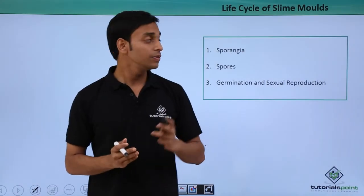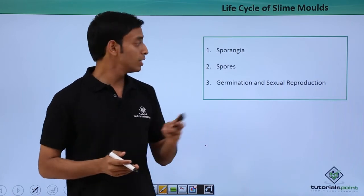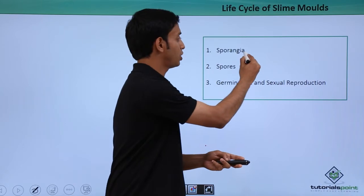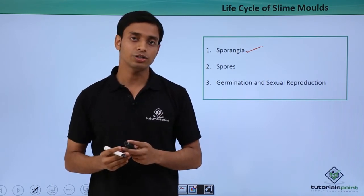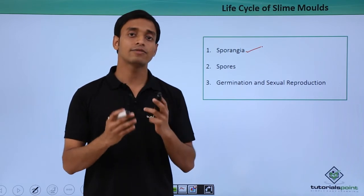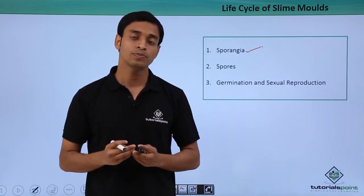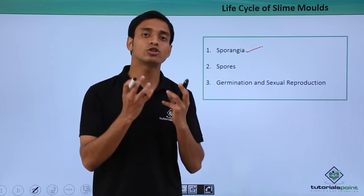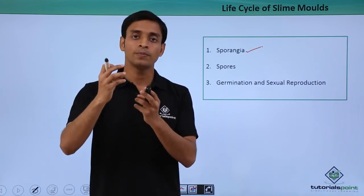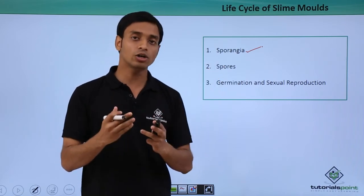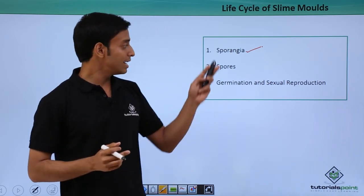Now let us talk about the different life cycles of acellular slime molds. The first is sporangia. These are structures mostly formed under unfavorable conditions — such as when cells have matured and grown old, or when nutrients are insufficient. The cells push their cytoplasmic content toward one side of the cell, which bulges out. This bulge structure is known as a sporophore, which can later divide or form a new organism under favorable conditions.